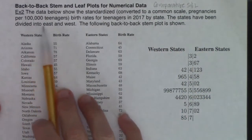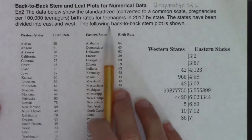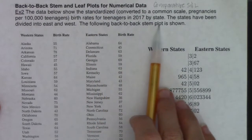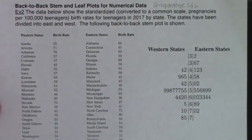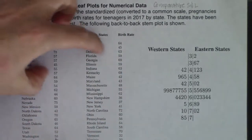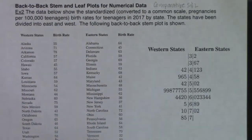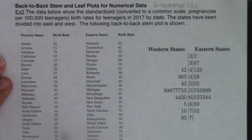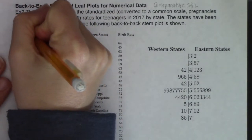The states have been divided into east and west, and the following back-to-back stem and leaf plot is shown. Here's our graph and here's our original data. So let's see if we can discern what was the variable in this problem — I'm just going to put 'variable' over here.